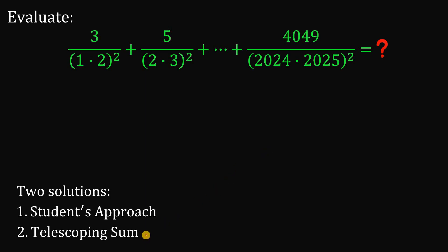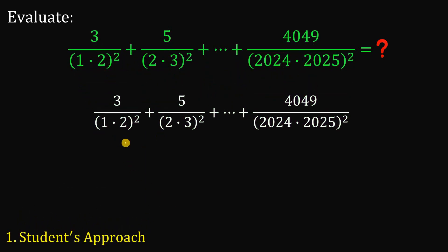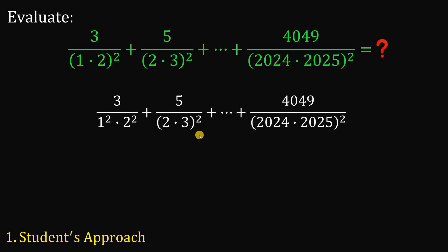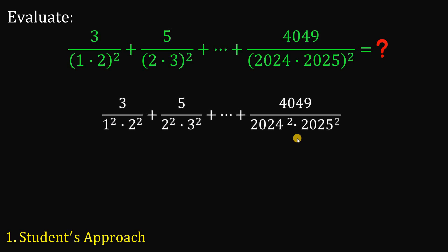The second method uses summation notation. Let's begin with our first method using the student approach. First, let's apply the law of exponents on the denominator. So 1 times 2 raised to the power of 2 simplifies to 1 squared times 2 squared, and we'll do the same thing to the rest of the denominators. Now we're going to observe something.